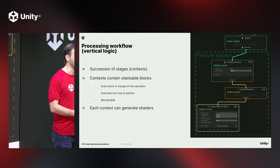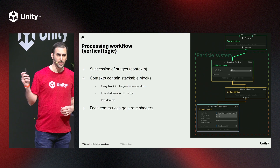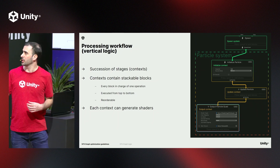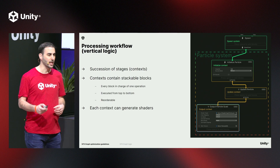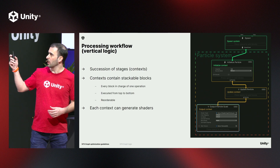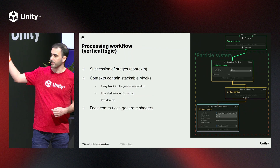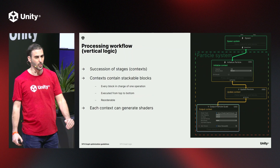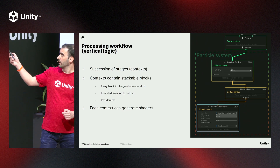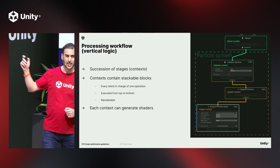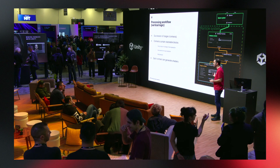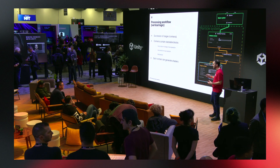Let's start with the vertical logic. We have a collection of nodes that we call contexts, and each one of them can contain blocks. These contexts will execute one after the other, and internally all the blocks will execute top to bottom. These contexts translate to shaders — in some cases compute shaders, and in other cases vertex and fragment shaders.